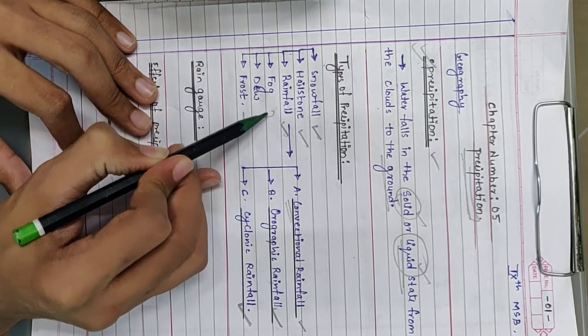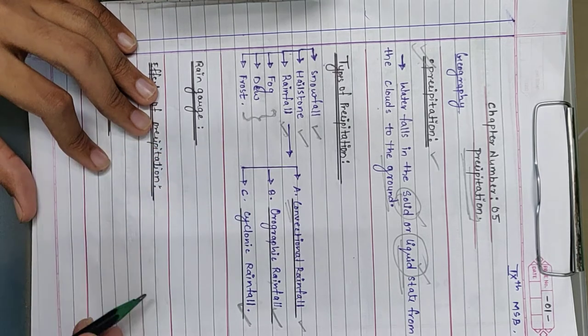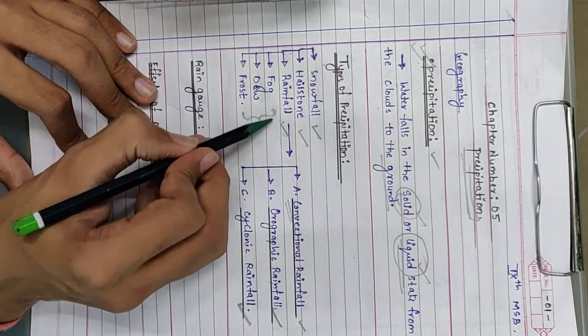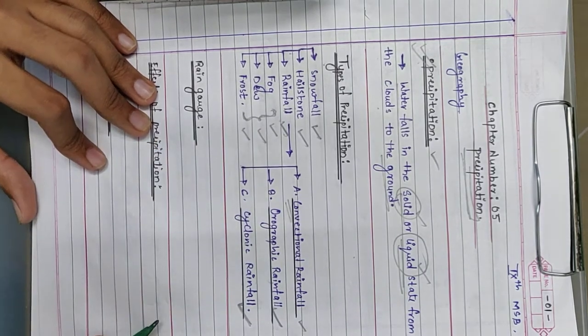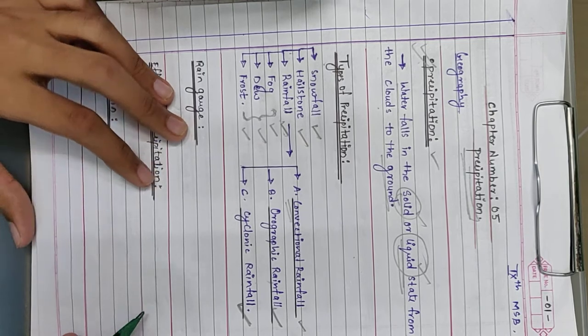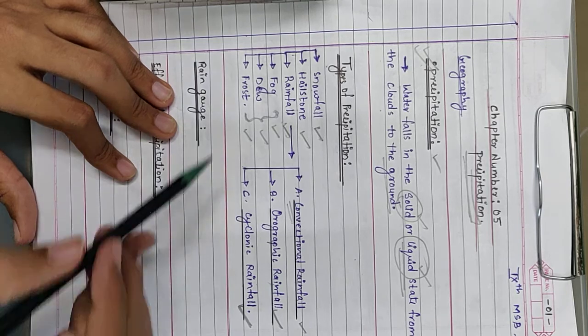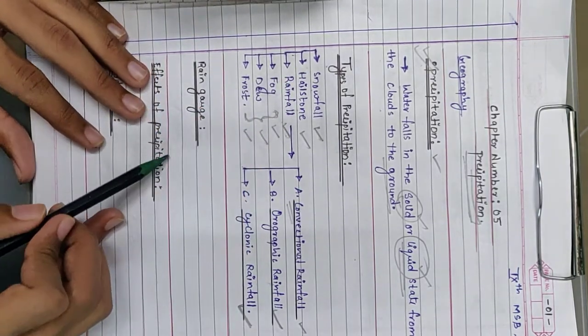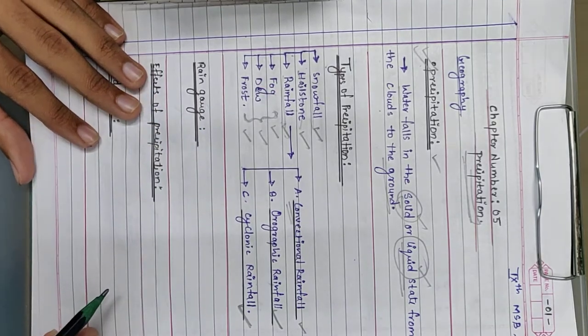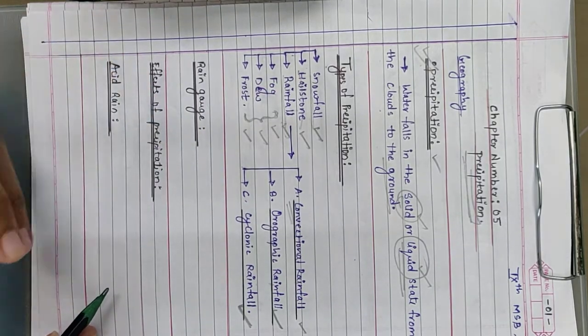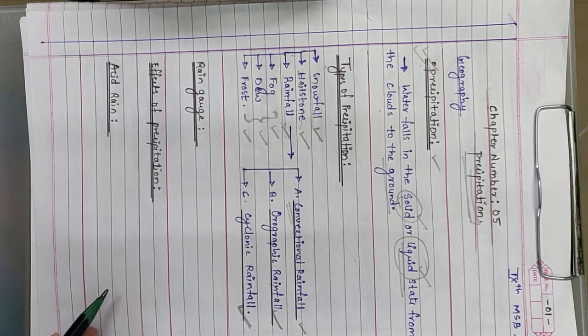There are few more types which are not that important or majorly calculated in precipitation, such as fog, dew, and frost. These three are also a division of precipitation, but not majorly classified. The major types of precipitation are snowfall, hailstone, and rainfall. We will study all these types of precipitation one by one in detail.